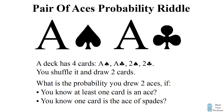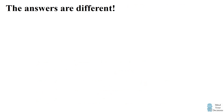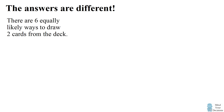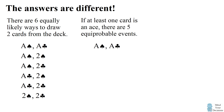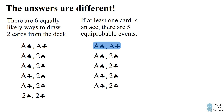I'm first going to present the theoretical calculation, and then I'm going to show how you can numerically estimate the probability in a spreadsheet. The surprising part about this problem is that the answers are different. When you draw two cards from a deck, there are six equally likely ways you can draw the cards. If you know that you've drawn at least one ace, then you can eliminate the possibility of having drawn the pair of twos. This leaves five equally likely events, and in exactly one of these events you've drawn a pair of aces. So the probability you've drawn a pair of aces given at least one ace is one divided by five.